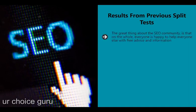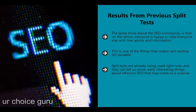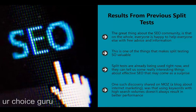The great thing about the SEO community is that on the whole everyone is happy to help everyone else with free advice and information. When a company takes the effort to run tests on hundreds of their pages, they can obtain useful information that can benefit the entire internet marketing industry until Google changes its algorithms. One such discovery shared on Moz was that using keywords with high search volumes doesn't always result in better performance. Will Critchlow tried inserting more popular key phrases into the meta tags and content of existing pages and found that in many cases those pages saw a drop in organic traffic of as much as 20%.